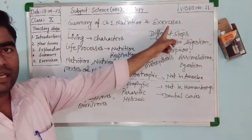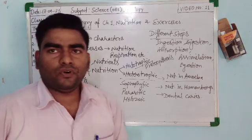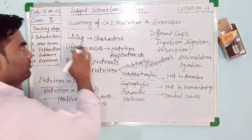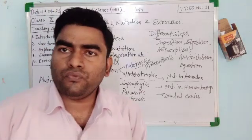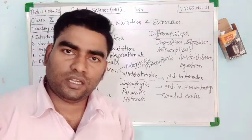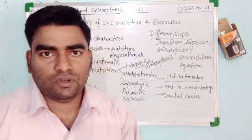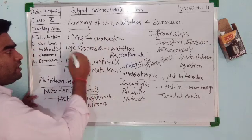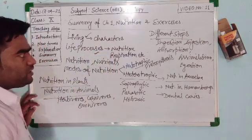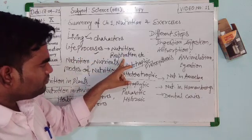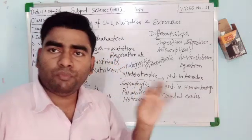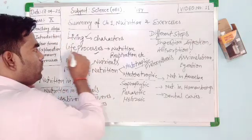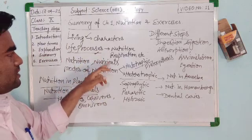So here is the summary of chapter one, Nutrition and Digestion. In the beginning of the chapter, we discussed living and non-living things. Living things can move, excrete, reproduce, and are sensitive; they need food, air, and water. Then we discussed life processes — nutrition, digestion, excretion, reproduction — all collectively known as life processes, which are necessary to maintain life.